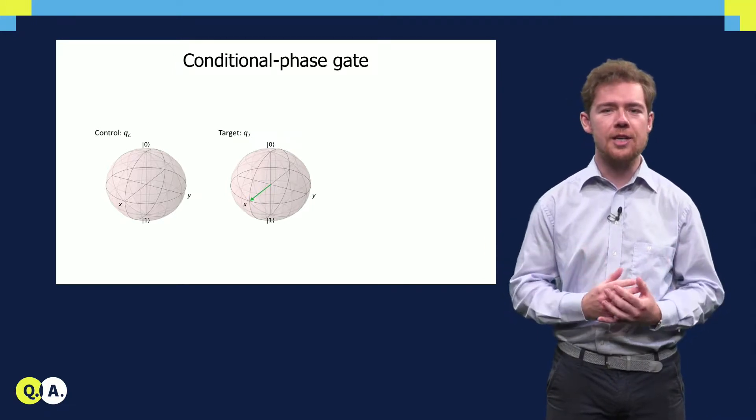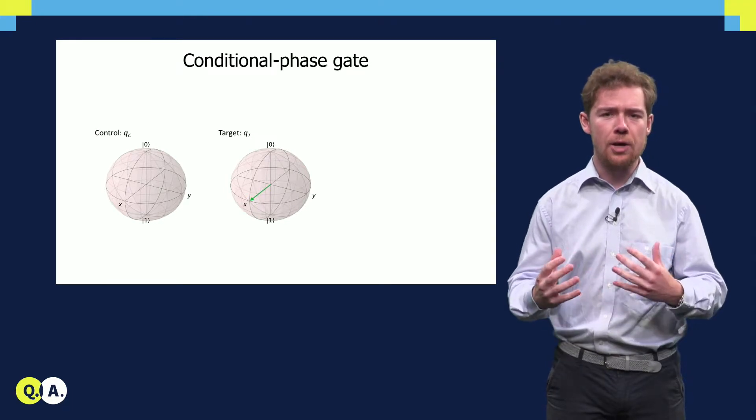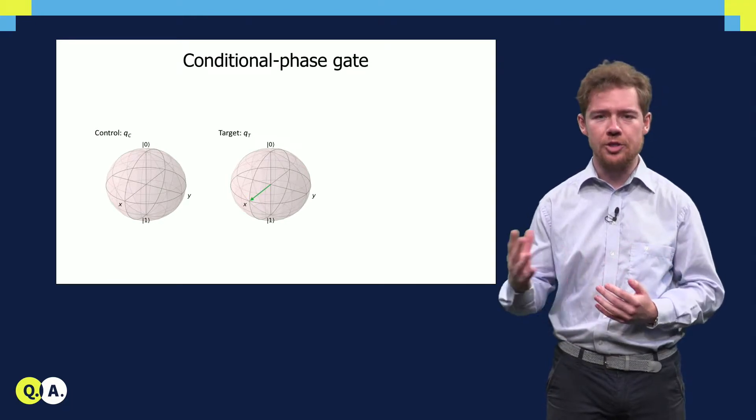Applying a conditional phase gate to two qubits causes the target qubit to acquire pi radians of phase based on the state of the control qubit.